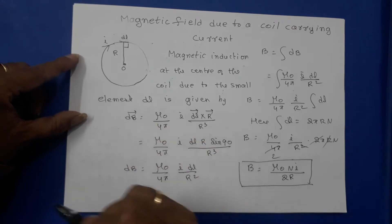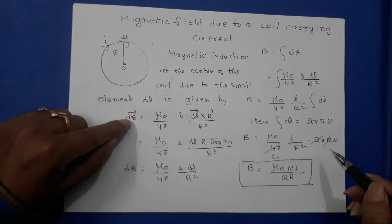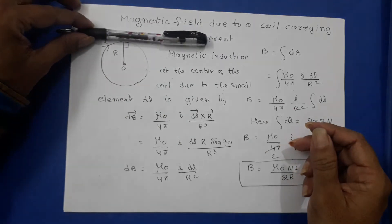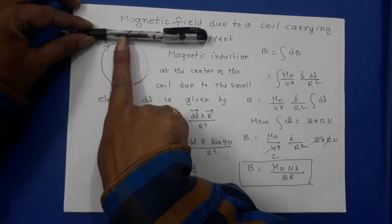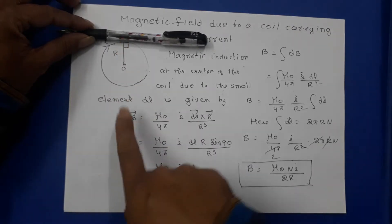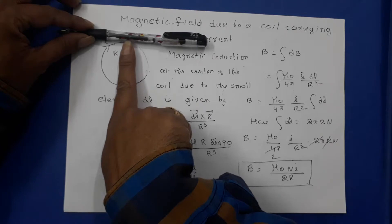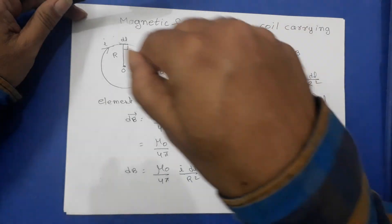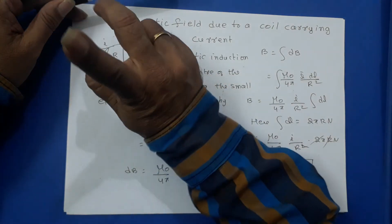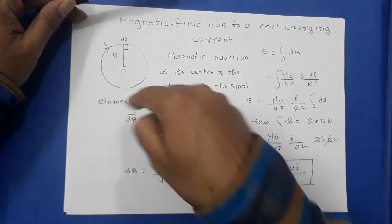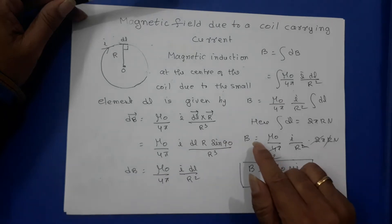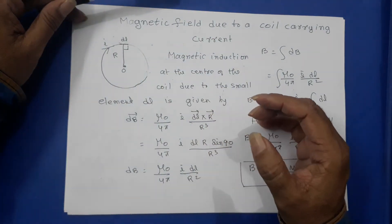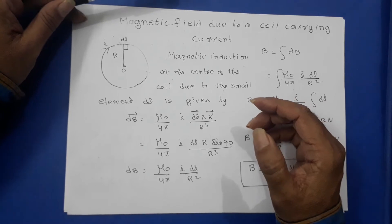What is the direction of DB? The direction of DB is perpendicular to both DL̄ and R̄. DL̄ is along the tangent and R̄ is the radius direction. So DB is perpendicular to both DL and R, meaning DB is normal to the page — it may be into the paper or out of the paper depending upon the direction of the current. For this we use the right-hand thumb rule.